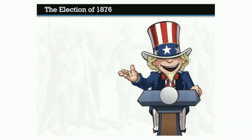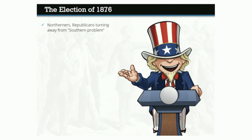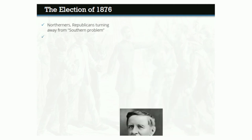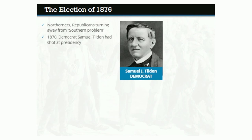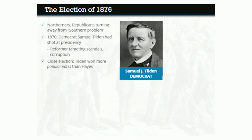1876 was an election year and President Grant's last year in office. Reconstruction was failing, and with it, the civil rights achievements that had briefly transformed the South. Northerners and Republicans were turning their backs on what many called the Southern problem. Nationwide disgust over Republican political scandals meant that Democrat Samuel J. Tilden had a real shot at the presidency. The New York governor ran as a reformer targeting the Grant administration and the supposed corruption of Republican governments in the South. The election was one of the closest in American history.